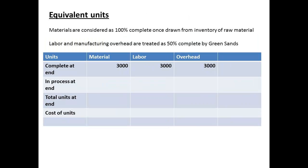Once raw materials are drawn from inventory, they are treated as 100% complete. The labour and overhead costs are treated as 50% complete. A business will determine how to treat materials, labour and overhead for partially completed units — not every business will use the figures that Green Sands have chosen. Units complete at the end: for materials, labour and overhead, the figure will be 3,000 units. For work in process, we have 2,000 units based on raw materials, but since labour and overhead are treated as 50% complete, the units for labour and overhead are 50% of 2,000, which means 1,000 units for each. Adding these together: 5,000 for materials, 4,000 for labour, and 4,000 for overhead.